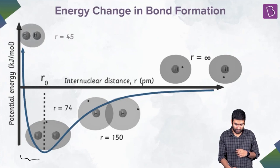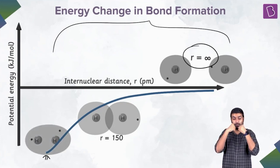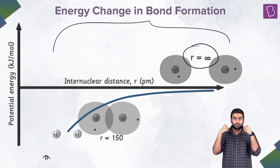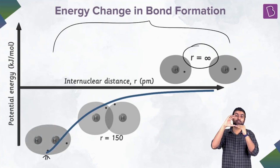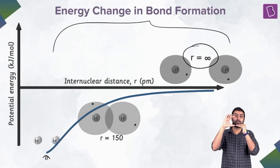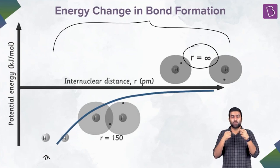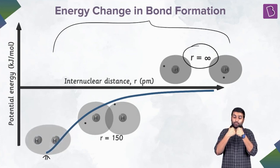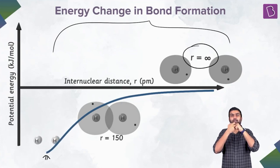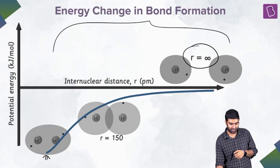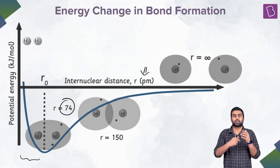So, bringing them closer: attraction, then repulsion starts to kick in. The net attraction force is still there initially, but as we bring them even closer the gap between attractive and repulsive forces reduces. There comes a point where the two atoms are neither attracting nor repelling each other — they are stuck together. This is what we call a chemical bond. This inter-nuclear distance is the bond length, which is 74 picometers for the H₂ molecule.